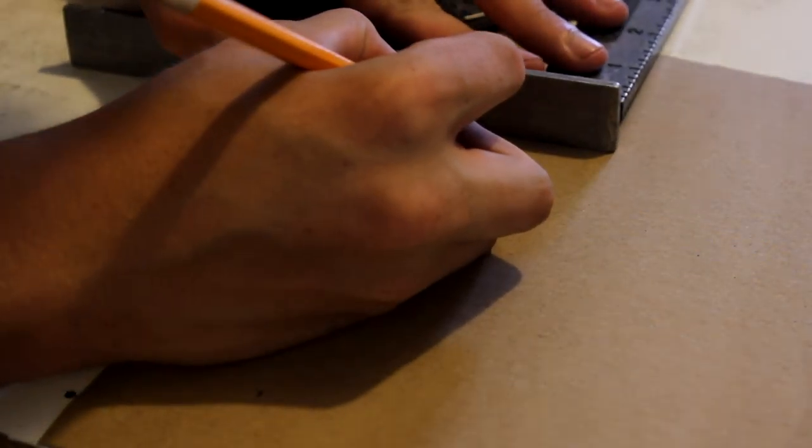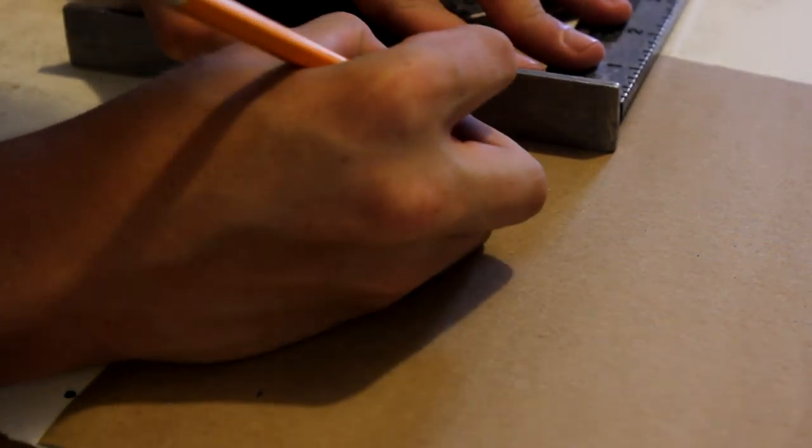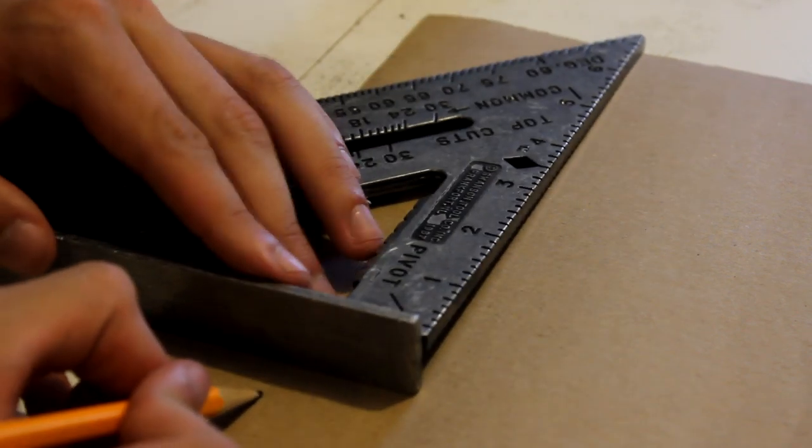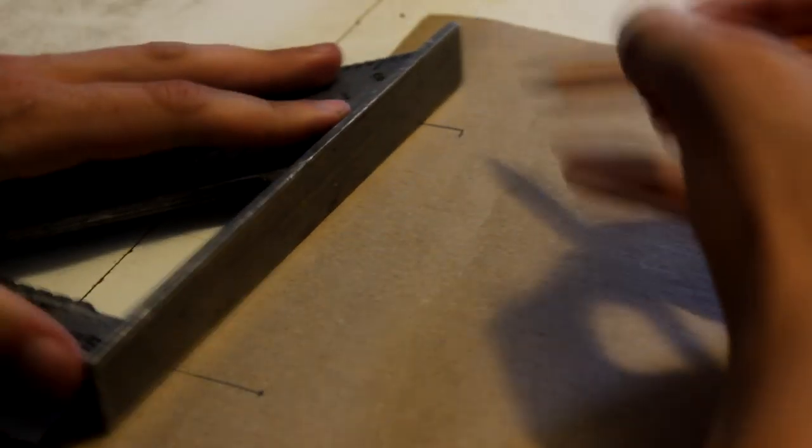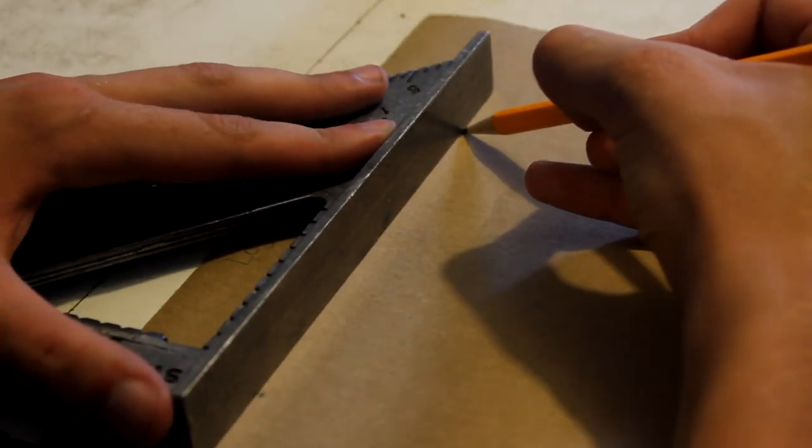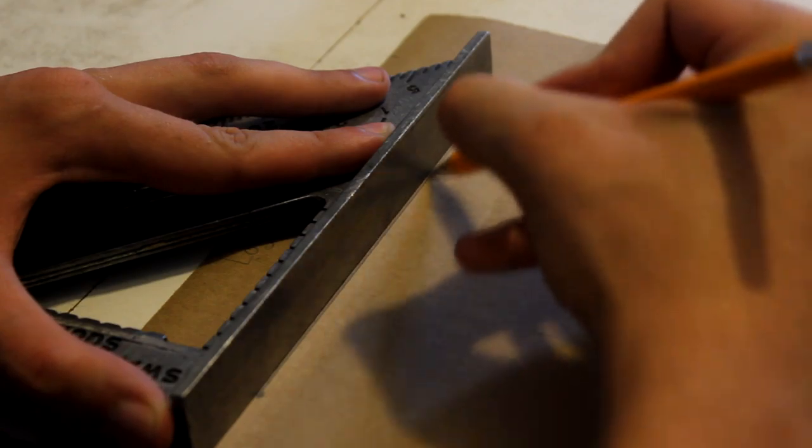Once you have the measurements you will need, you can begin laying out your design on the back of the grip tape. When doing this, have good use of space so you don't waste grip tape. Also, use your straight edge here if you need it to make sure your measurements are accurate and your lines are straight.